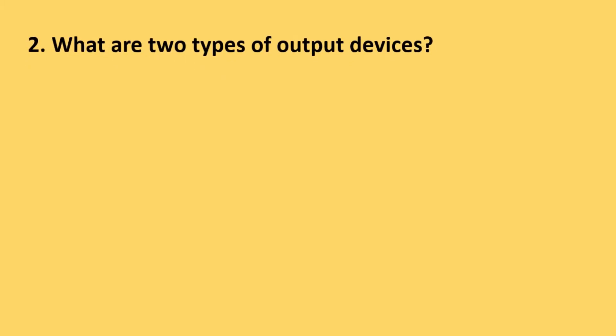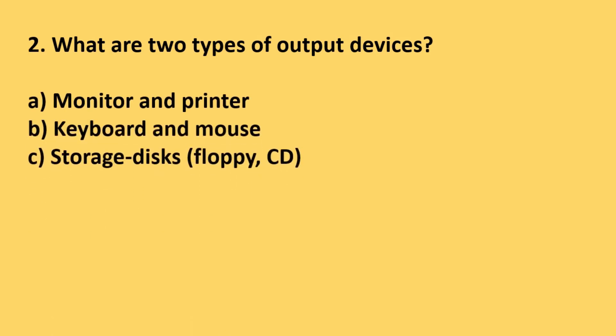Question number 2: What are two types of output devices? Options are monitor and printer, keyboard and mouse, storage disks floppy or CD, pendrive and mouse. The correct answer is option A, monitor and printer.